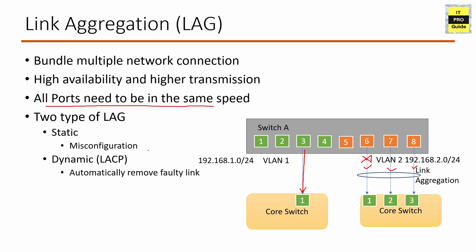There are two types of LAGs. One is static, where you manually configure the link aggregation. The next is dynamic LAG, which uses Link Aggregation Control Protocol (LACP) to automatically negotiate settings between the two connected devices. One of the most common problems during link aggregation setup is misconfiguration, which happens with static manual configuration. Using LACP helps you get rid of this misconfiguration. It automatically removes faulty links if a member stops sending packets, helping to minimize packet loss.